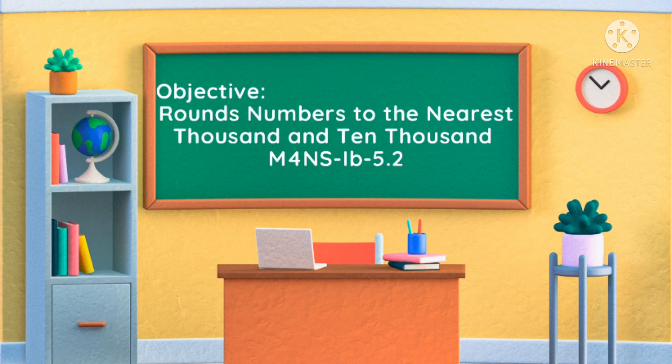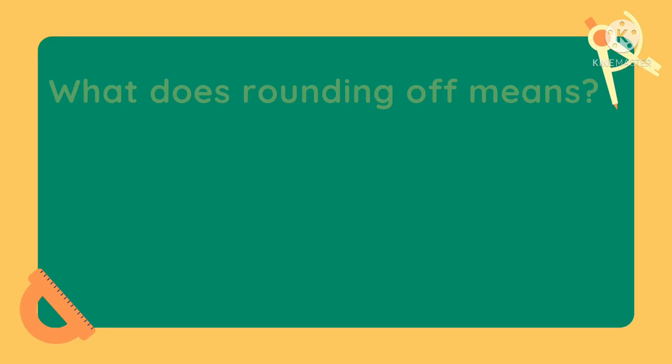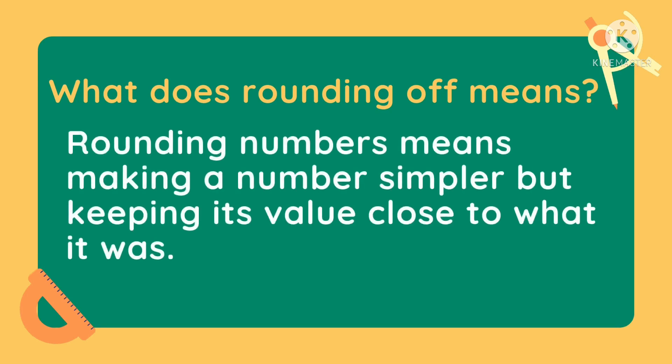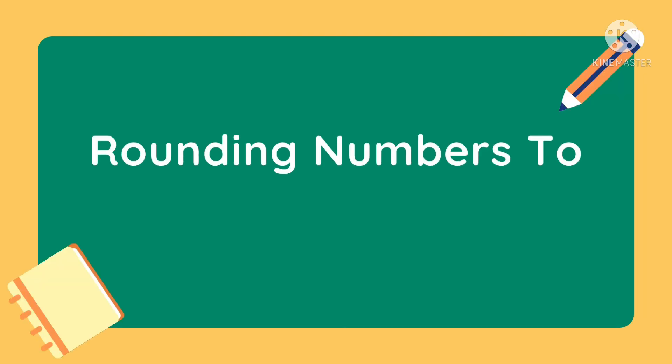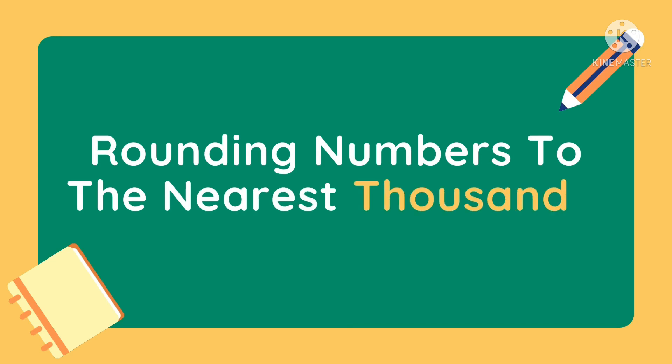But before that, you have to remember something first. What does rounding off mean? Rounding numbers means making a number simpler but keeping its value close to what it was. Now, let's try to round off numbers to the nearest thousand.